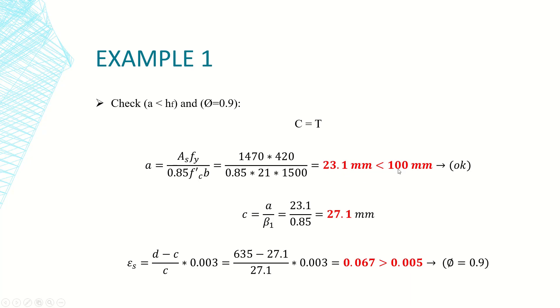So it's 23.1, depth of flange is 100. Since it's less, the assumption is okay. From a I can determine c which is the depth of the neutral axis. The actual depth a is the depth of the stress block.